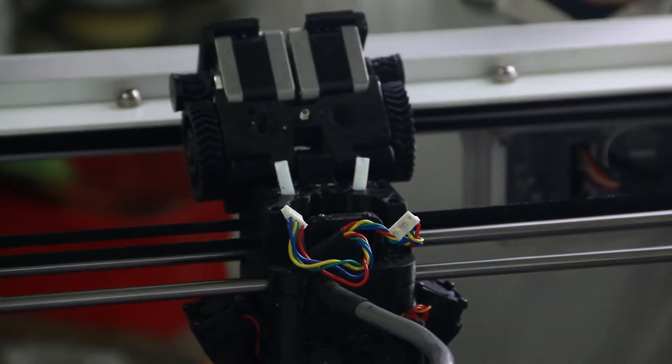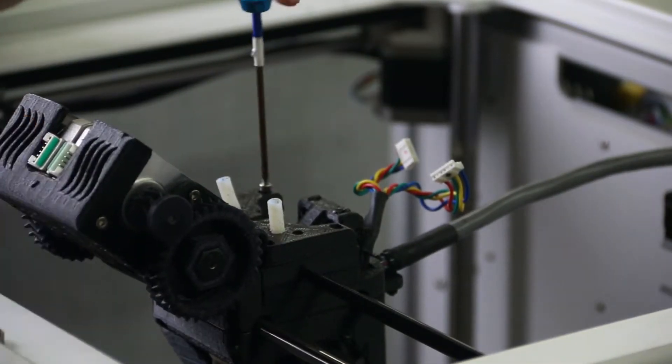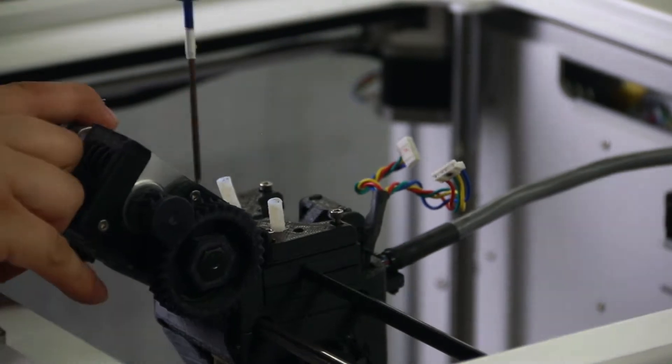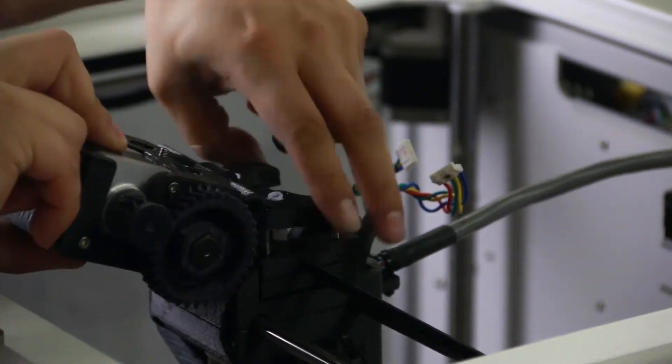Tilt motor housing forward. Remove four M3 socket head cap screws with a 2.5mm Allen wrench. Remove the motor housing.